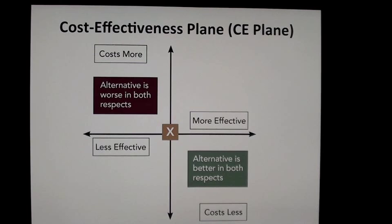We have pictured here the cost-effectiveness plane. Whenever we're talking about cost-effectiveness analysis or cost-utility analysis, we need to think about the results in terms of the four-quadrant cost-effectiveness plane, where the horizontal axis represents the delta E, and where the vertical axis represents the delta C.